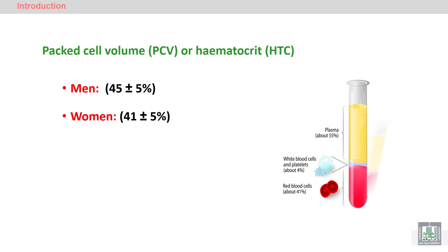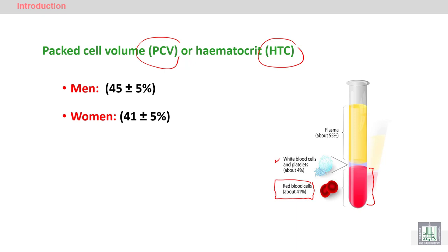The packed cell volume, or hematocrit, is measured by centrifuging blood taken in an anticoagulated tube. Centrifugation separates the red blood cells to the bottom, plasma to the top, and white blood cells and platelets in the buffy coat in the middle. The length of the column of red blood cells in the sediment at the bottom of the tube is what is called PCV or hematocrit. This value also differs between males and females because of hormonal differences.